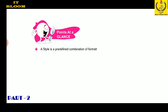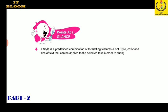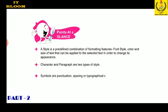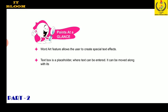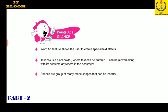Let us quickly glance through the key points discussed in this chapter. A style is a predefined combination of formatting features — font style, color, and size of text — that can be applied to selected text to change its appearance. Character and paragraph are two types of style. Symbols are punctuation, spacing, or typographical characters not generally available on the keyboard. WordArt allows the user to create special text effects. A text box is a placeholder where text can be entered and moved anywhere in the document. Shapes are a group of ready-made shapes that can be inserted directly into the document.